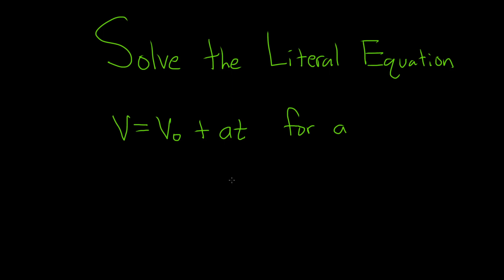Solve the literal equation. So we have v equals v sub zero plus a times t, and we're looking for a.